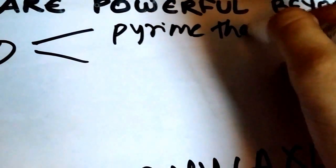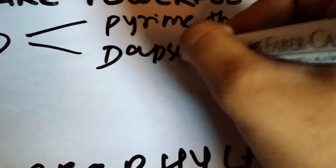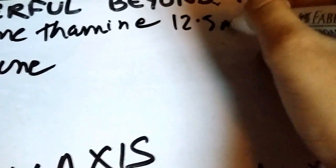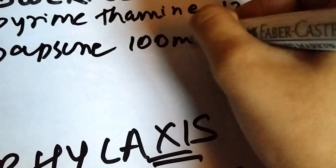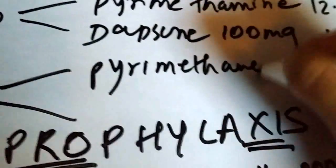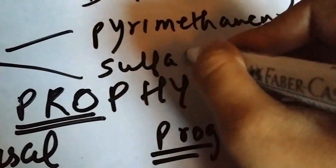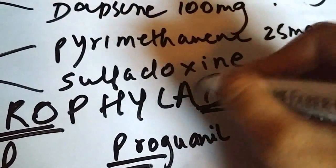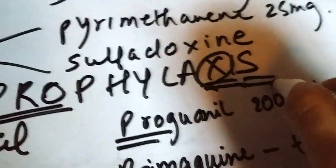There are other two regimens as well. There is PD for pyrimethamine and dapsone. Pyrimethamine is given 12.5 milligrams and dapsone is given 100 milligrams. And there is PS for pyrimethamine given 25 milligrams and sulfadoxine. Sulfadoxine has an X, sulfadoxine has an S, prophylaxis has an S. PS: pyrimethamine.